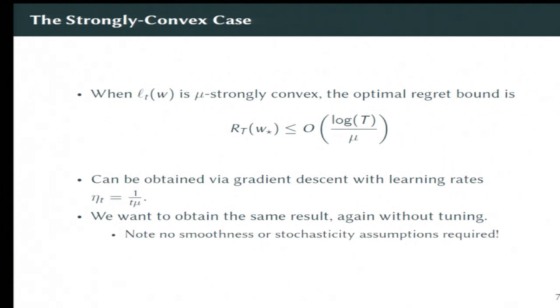In particular, I'd like to stress here that we're going to be making no smoothness assumptions. We're not going to be making any stochasticity assumptions. And we're not going to be asking for any second-order information about what mu is. We're just going to be doing straight-up online convex optimization with potentially but not necessarily strongly convex losses.